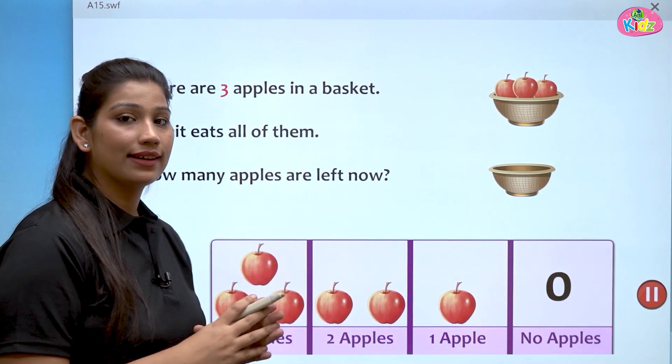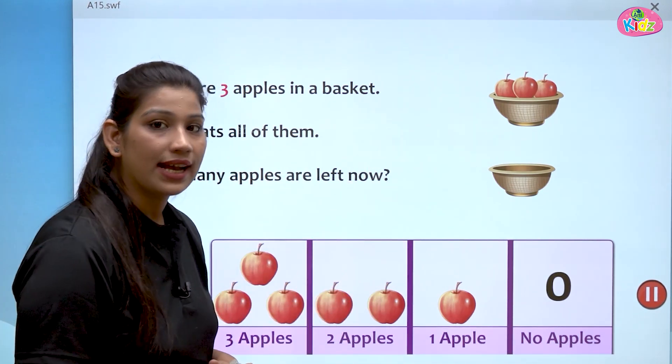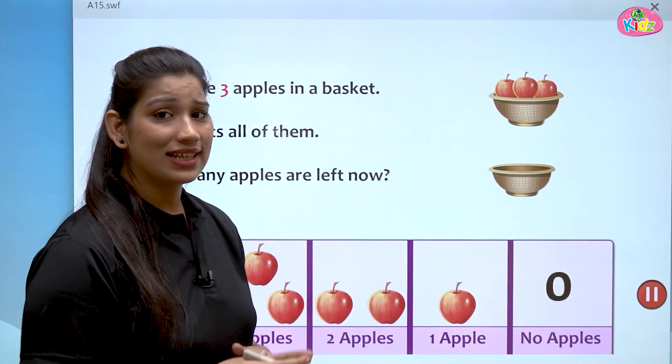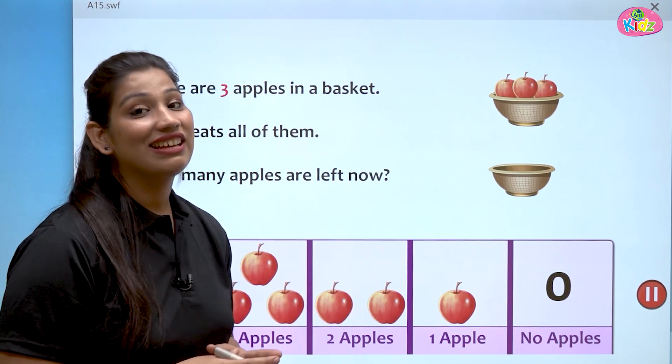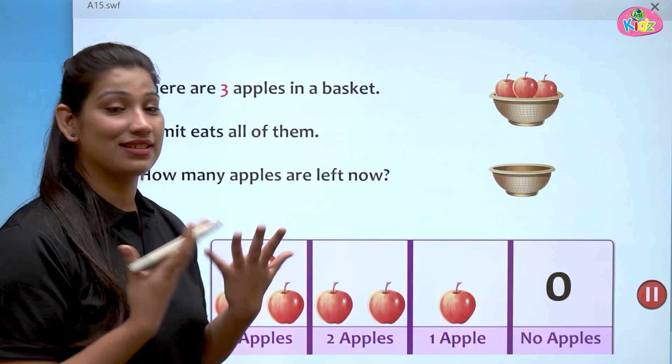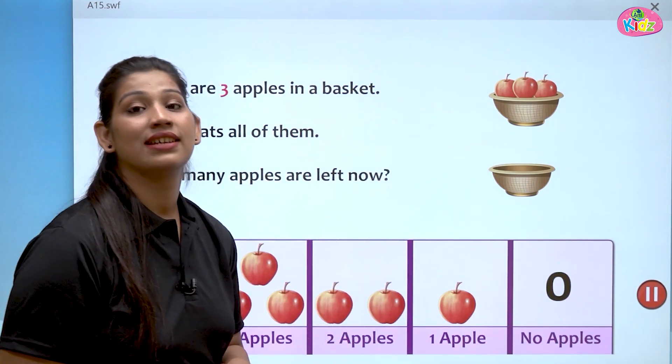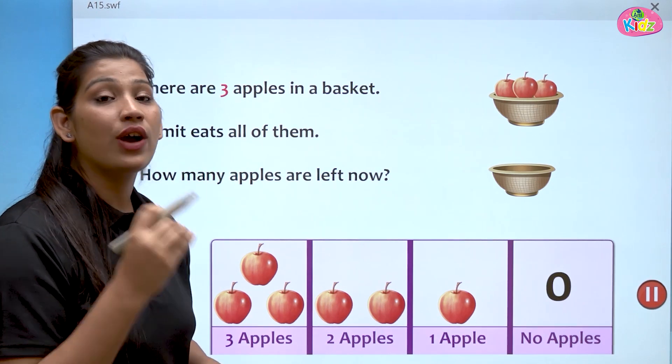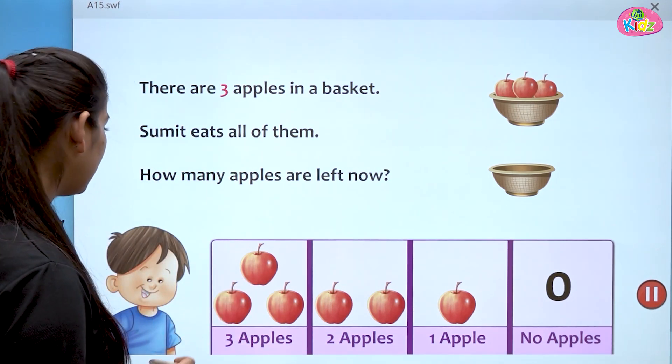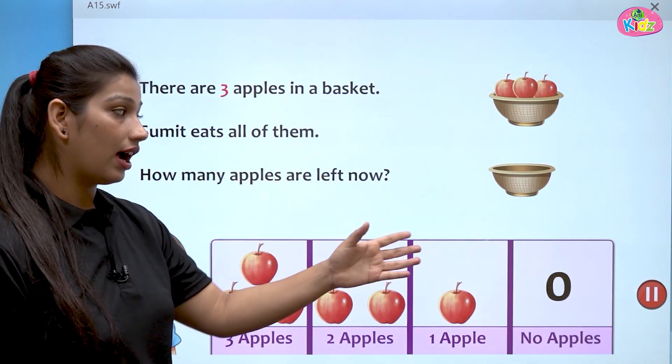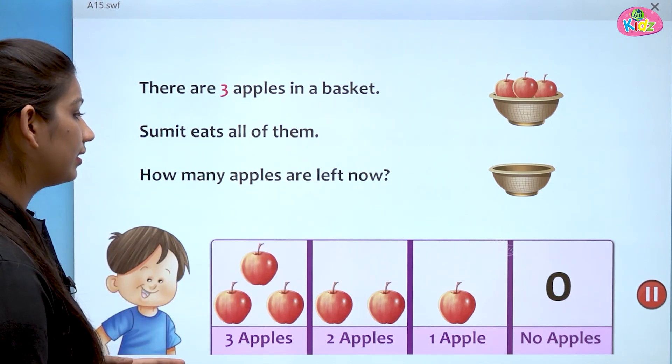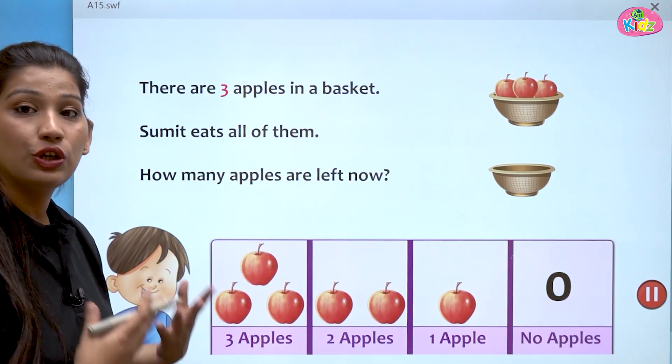Sumit ne teino apple kha liye. Now, you can see the basket. How many apples are left in the basket? Yes, no apples. There are no apples left in the basket. There are zero apples in the basket. So, we will say there are zero apples in the basket or no apples.